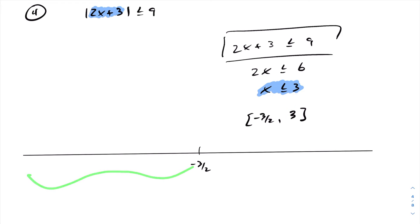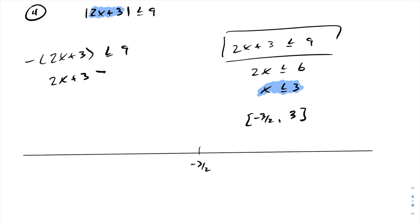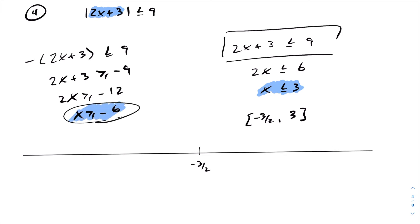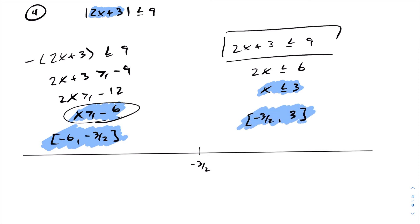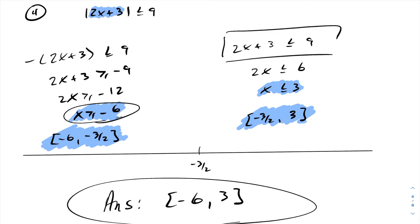Moving to the left-hand side, any value substituted in will result in the absolute value acting on a negative value. So I can drop the absolute value symbol, but it'll cost a minus sign. Multiplying across by negative 1 — don't forget to change the direction of the inequality. Continuing, we get x is greater than or equal to negative 6, which is within this interval. So the answer on the left-hand side goes from square bracket negative 6 until negative 3 over 2. Putting both intervals together, the complete solution set for this inequality goes from square bracket negative 6 to 3 square bracket.